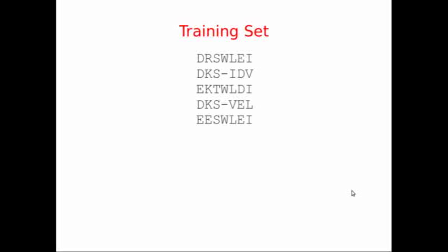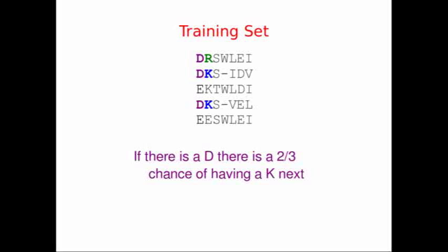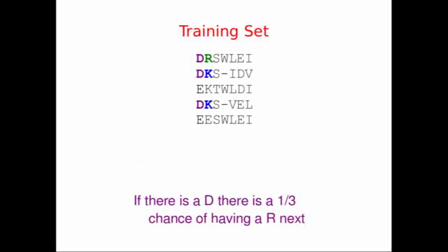The way that we build it is very similar. We start with our training set that we've aligned, and we calculate the probability of one amino acid following another. So, in this case, if we start with an aspartate with a D, there's a two-thirds probability of having a lysine next. There's only a one-third probability of having an arginine following a D.